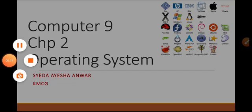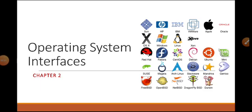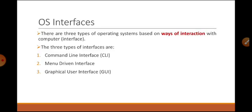Here we need to understand the concept of an interface. An interface is basically something through which we can interact with the operating system. For example, if you are using a mobile you can see a particular screen — that screen is known as the interface. You can see different types of icons on the interface of your mobile screen, and also some icons, files, and a simple text field for searching. So it is an interface provided by the mobile.